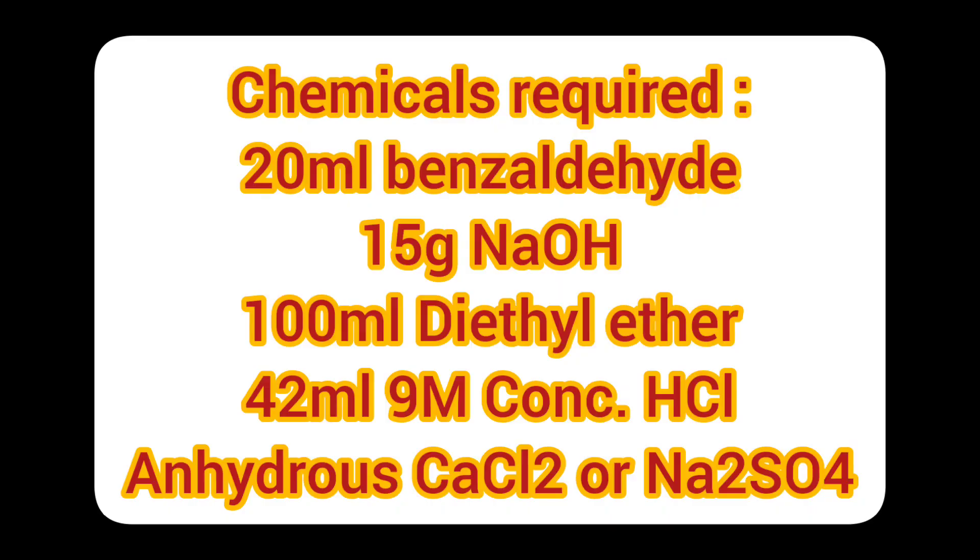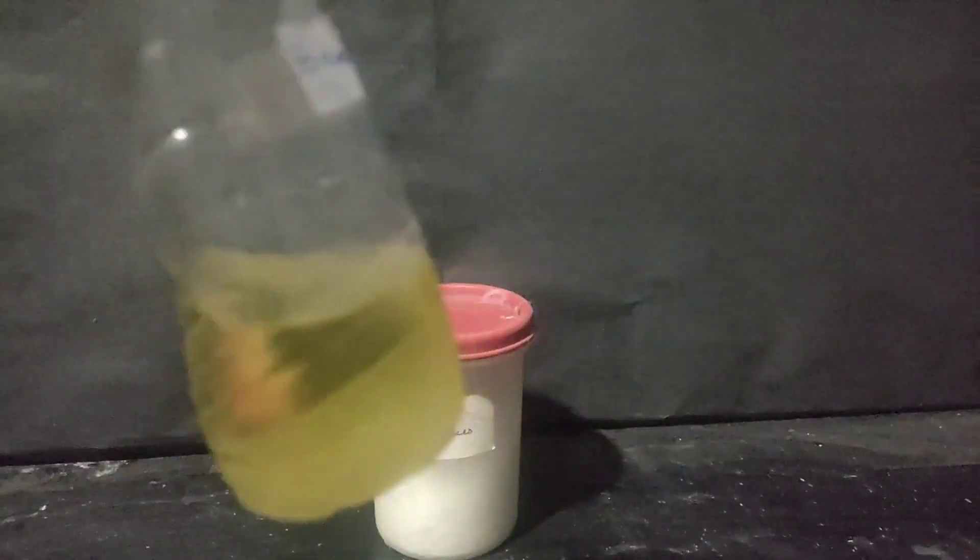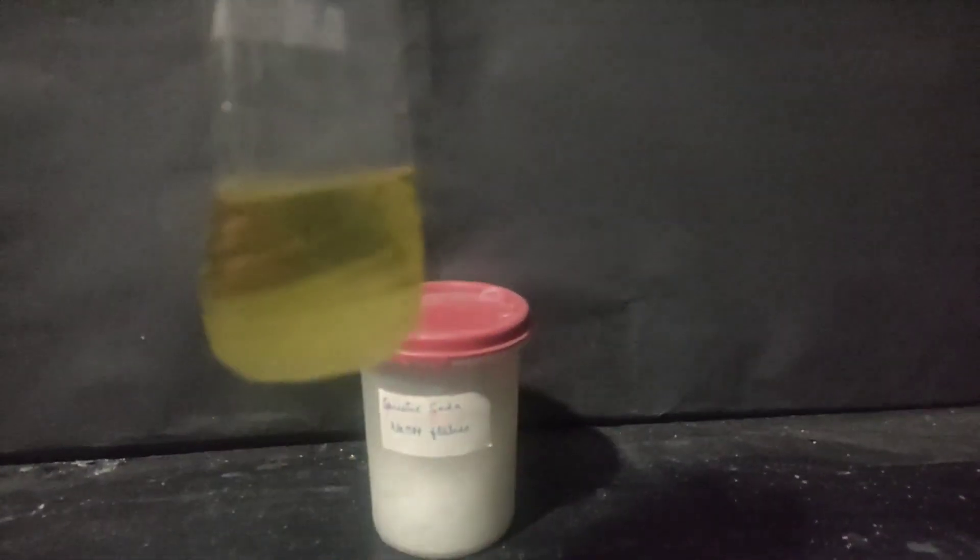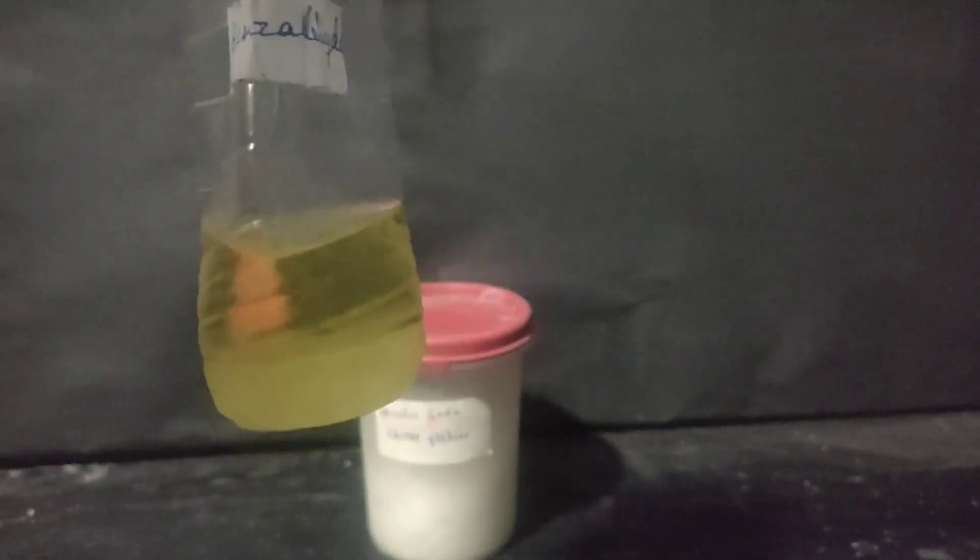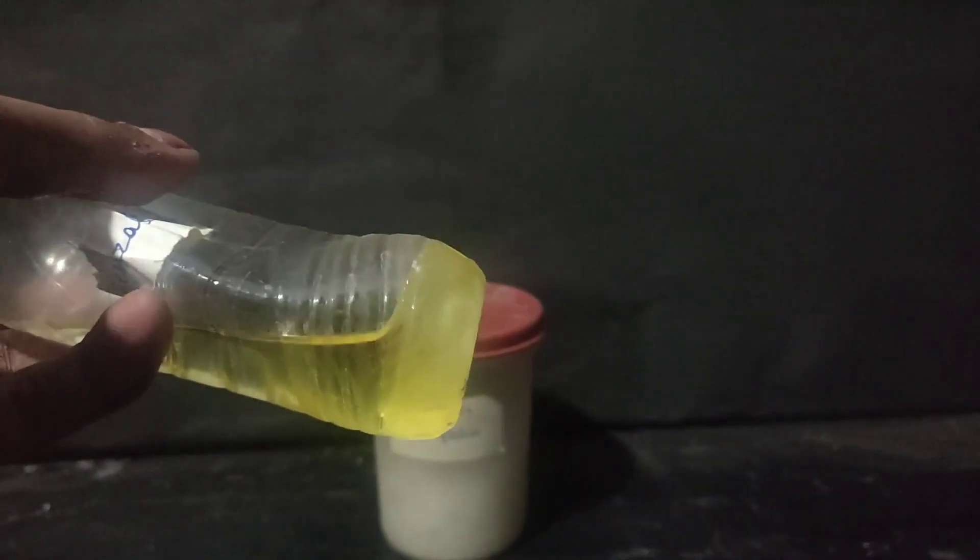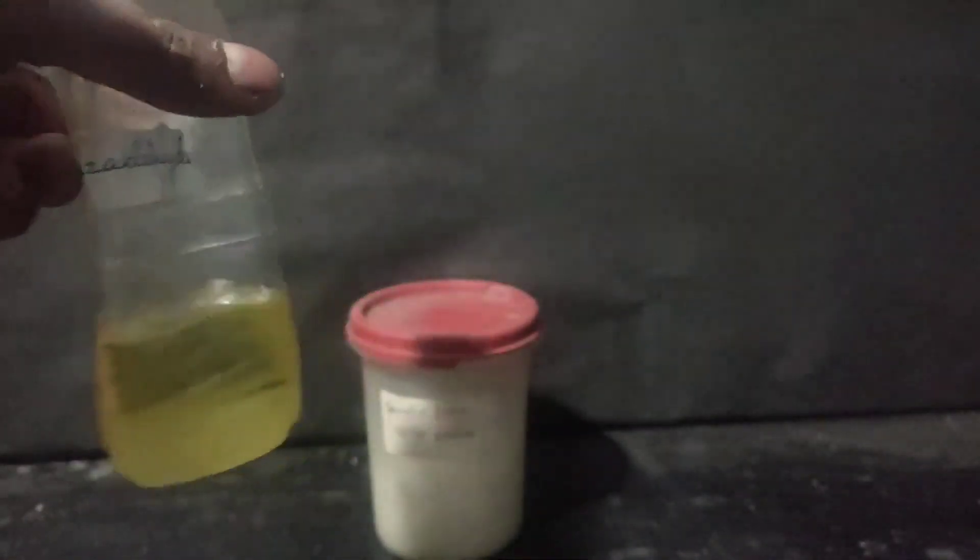So for the demonstration, I took 20 ml of benzaldehyde, 15 g of sodium hydroxide, 100 ml of diethyl ether, and 42 ml of 9 molar hydrochloric acid which will be used later for the workup. But as you can see, my benzaldehyde is yellow colored and inside the bottle some white crystals of benzoic acid have been formed.